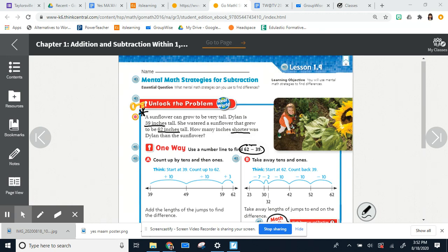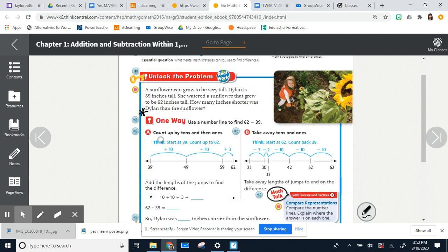So we can count by tens and then ones. We have a number line from 39 to 62. So basically what they do in part A, they count by tens first. We add 10 to 39 to get to 49, and then we go from 49 to 59, another 10. So far we've got 20. And then we go three more, and then we get to 62.